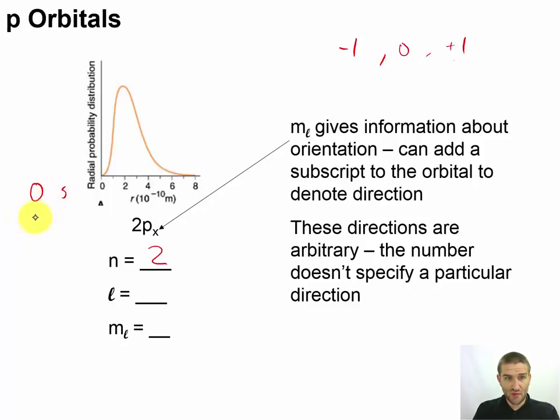0 is going to be s orbitals. 1 is going to be a p orbital. 2 will be a d orbital. 3 will be an f orbital. And then for higher numbers, it goes on from there. So this is going to be a p orbital, also known as quantum number 1.